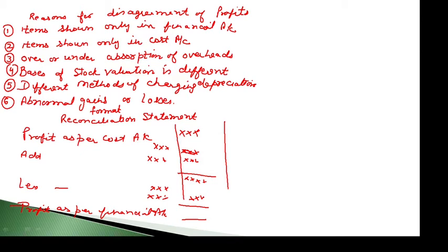This is a simple way to understand. If you have a profit as per cost accounts and there is an expense that is more in financial accounts, then that item will reduce the profit in financial accounts and you will need to deduct it accordingly to reconcile.